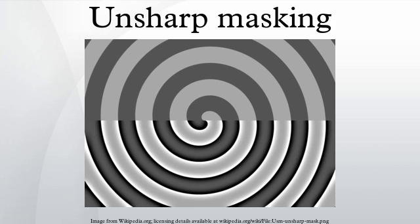Typically three settings control digital unsharp masking. Amount is listed as a percentage and controls the magnitude of each overshoot — this can also be thought of as how much contrast is added at the edges; it does not affect the width of the edge rims. Radius affects the size of the edges to be enhanced, or how wide the edge rims become, so a smaller radius enhances smaller scale detail. Higher radius values can cause halos at the edges — a detectable faint light rim around objects. Fine detail needs a smaller radius. Radius and amount interact; reducing one allows more of the other.